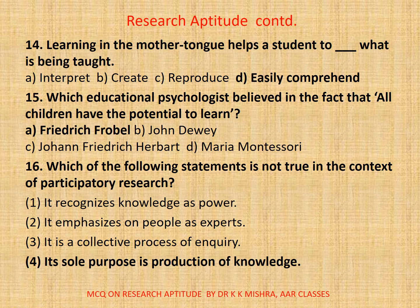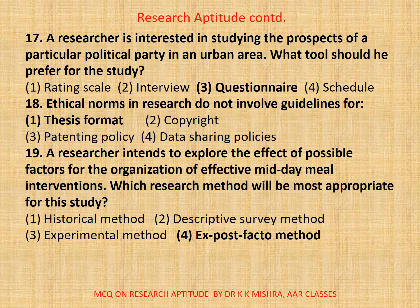Question 17: A researcher is interested in studying the prospects of a particular political party in an urban area. What tool should he prefer for the study? 1) rating scale, 2) interview, 3) questionnaire, 4) schedule. The correct option is 3 — questionnaire.